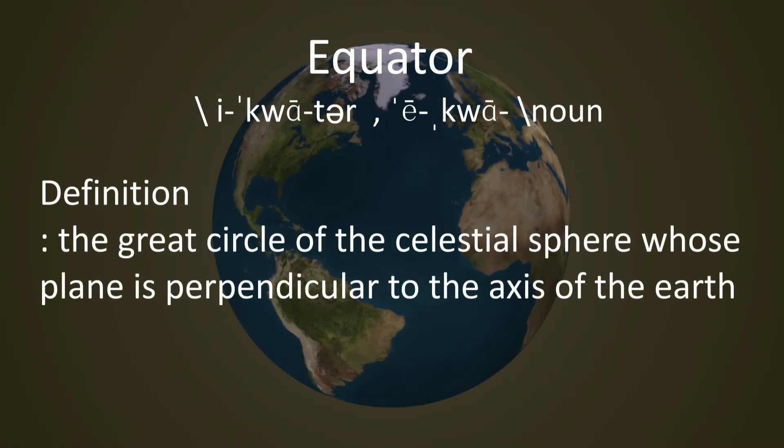Equator. Definition: The great circle of the celestial sphere whose plane is perpendicular to the axis of the Earth.